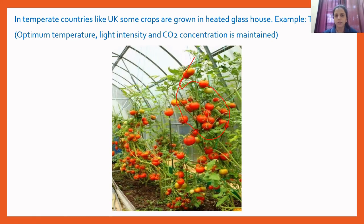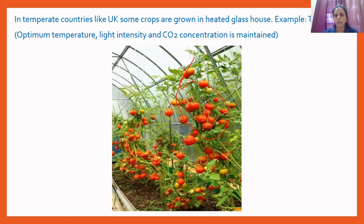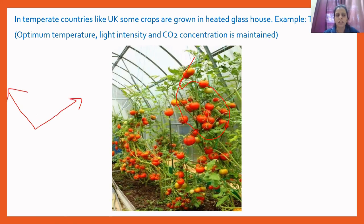There is another region on earth called the tropical region, present near the equator, which receives the maximum amount of sunlight. Here the temperature is generally very high, especially during the daytime. If temperature goes beyond the optimum temperature, the rate of photosynthesis decreases because beyond optimum temperature, enzymes get denatured — the shape of the active site of the enzyme changes and substrate molecules are no longer able to fit into the enzyme.